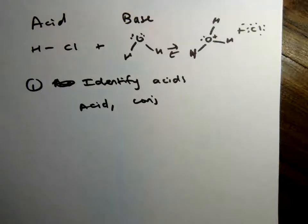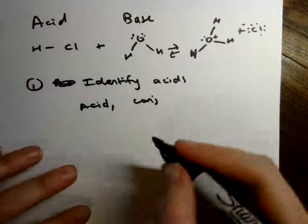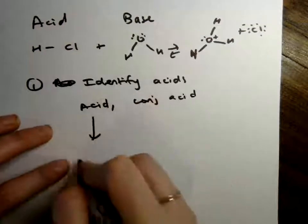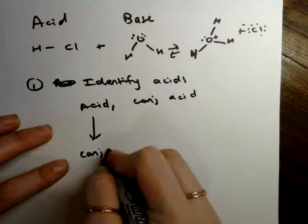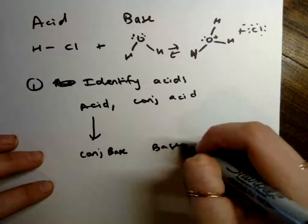Okay, but then we're looking for our conjugate acid and our conjugate base. So one way to think of that is your base goes to, so we're identifying our acid and our conjugate acid. Our acid goes to a conjugate base, and our base goes to a conjugate acid.